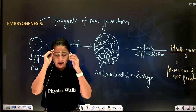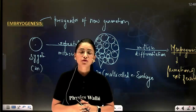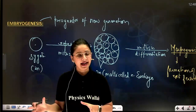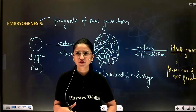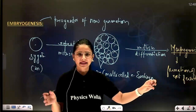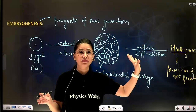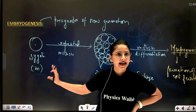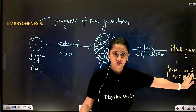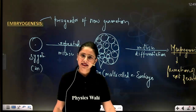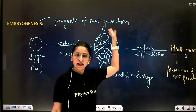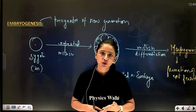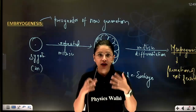After embryogenesis comes morphogenesis - formation of morphological features like roots, stems, and leaves. The embryo undergoes further mitosis and differentiation: some cells differentiate to function like root, some like stem. In plants, embryos are well protected by the ovule, which transforms into seed, and the ovary wall which transforms into fruit. All those topics will be taken in the next chapter - sexual reproduction in flowering plants. This marks the end of the first chapter.